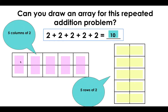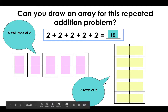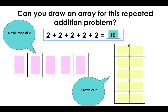This array shows five groups of two — I can count by two: two, four, six, eight, ten. This array shows five rows of two: two, four, six, eight, ten. Both arrays correctly show this repeated addition problem.